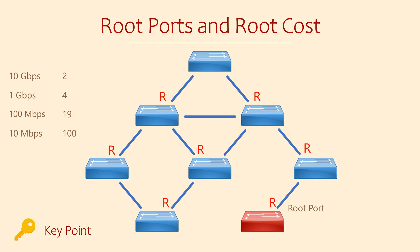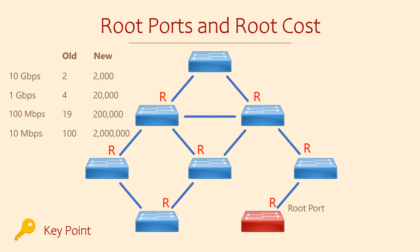There are two different ways that spanning tree might calculate the cost: the old way and the new way. The old way isn't so good in modern networks — it was developed when all interfaces were slow by today's standards. These days, as most interfaces are fast, the cost looks very similar on all ports. The new method addresses this by using larger cost values.